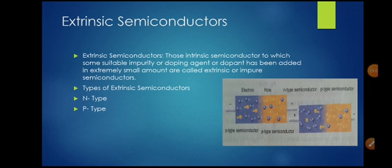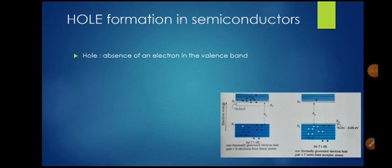In pure or intrinsic semiconductors, the number of conduction electrons equals the number of holes. The Fermi level in the intrinsic semiconductor lies exactly in the middle of the energy band. The width of the energy band is small compared to the forbidden energy gap. Since the band width is small, all levels in the band have the same energy. A hole is defined as the absence of an electron in the valence band.